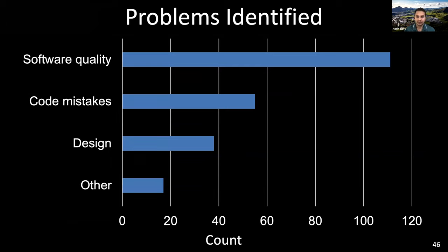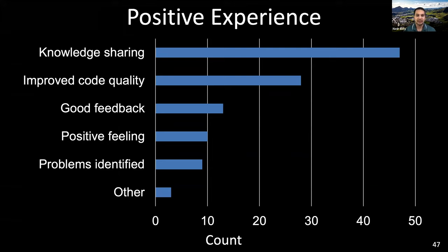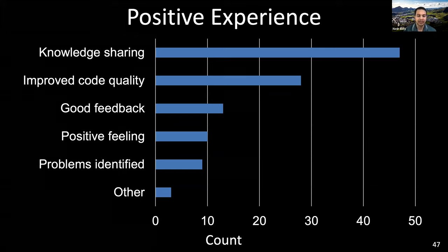Code review helped research software developers identify many problems in the code. The figure shows three high-level categories of problems reviewers identified, with most participants indicating problems related to software quality and code mistakes. We identified five categories of positive experiences research software developers have regarding code review. The most common positive response is knowledge sharing — it is a very cooperative process in which solutions are welcomed and coders look for guidance. In large projects, it is rare that anyone understands the whole picture and people rely on each other's experience.